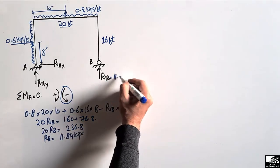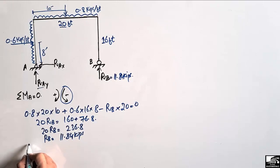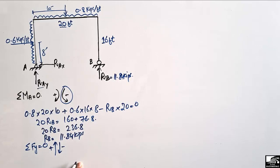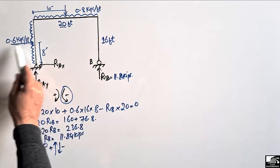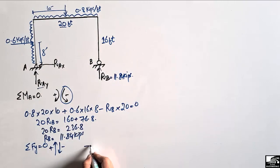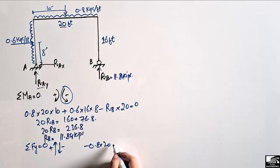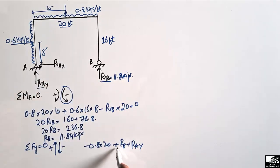To find RAY, we take the summation of vertical forces equal to zero. Upward forces are positive and downward forces are negative. The only vertical load is the 0.8 kip per foot distributed load acting downward: minus 0.8 multiplied by 20. The upward forces are RB plus RAY, both acting upward. Setting the sum of all vertical forces equal to zero.